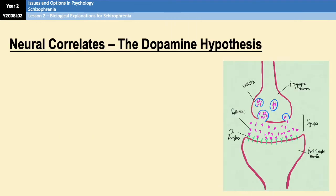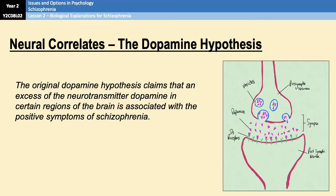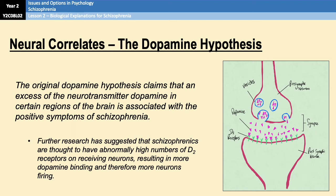The original dopamine hypothesis was the idea that schizophrenia is caused, or at least associated with, an excess of dopaminergic activity in certain regions of the brain, which is responsible for positive symptoms of schizophrenia. Research then suggested that the actual problem is that people with schizophrenia have abnormally high numbers of dopamine receptors on receiving neurons. So when dopamine is released into the synapse, it results in more dopamine binding to post-synaptic receptor sites and therefore more neurons firing. For example, an increase of activity in an area linked to your auditory cortex could lead to the experience of auditory hallucinations — a positive symptom of schizophrenia.